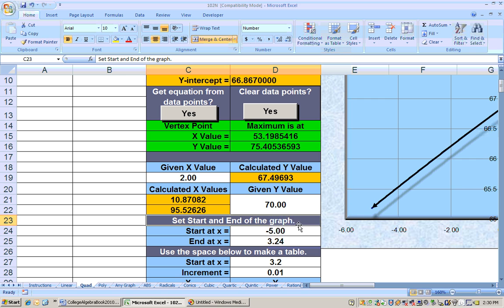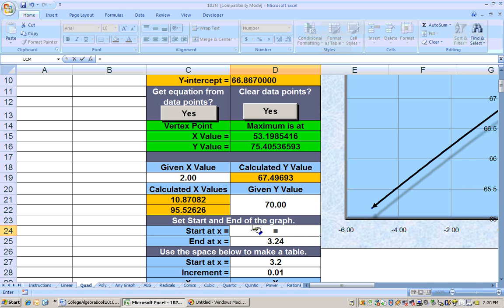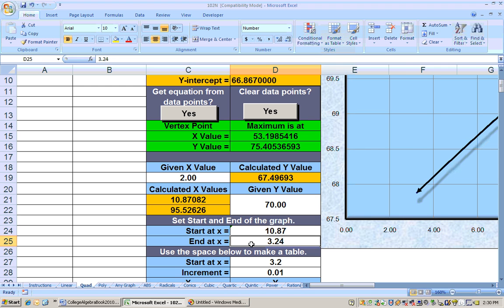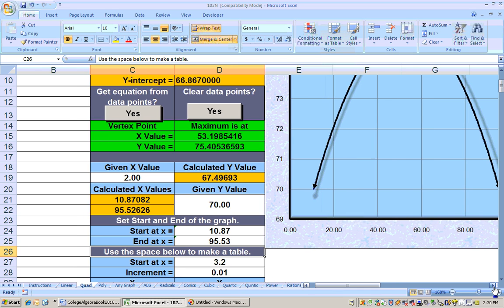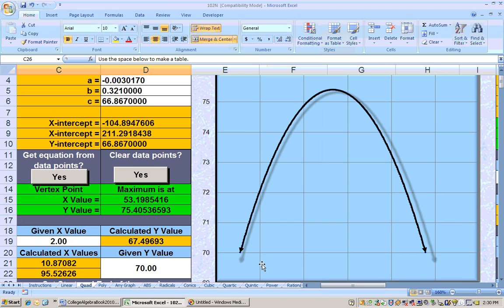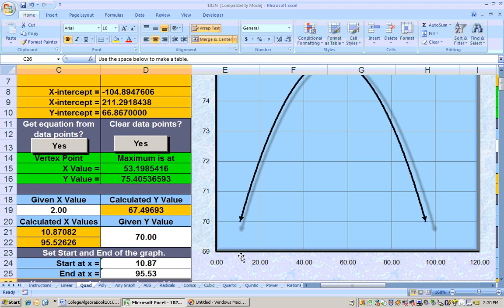Now, if you want to see those points on the graph, we could make the start. I'll just do equals this value, or you could type it in, and I'll make the end this value right here. And now I get the graph, and we can see that it reached 70 right here.